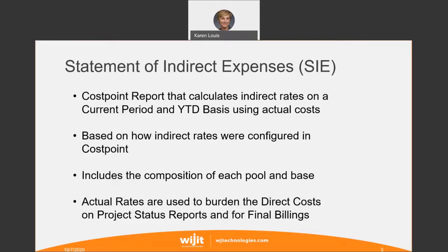In Cost Point, the best practice is to use wild carding when you set up your pools and bases, so that when a new GL account is added, the system will automatically include that new account in your indirect rate calculation. The statement of indirects will show you the composition of each pool and each base, and then it calculates a percentage for that indirect rate. Those percentages, or what we call actual rates, are then used on your project status report to burden your direct costs and determine the profitability of your contract.